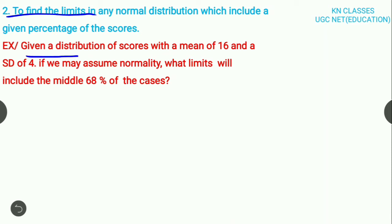Now come to the question related to the second application of NPC. Read the question. Given a distribution of scores with mean 16 and standard deviation 4, if we may assume normality, what limits will include the middle 68% of the cases? First, draw the diagram.